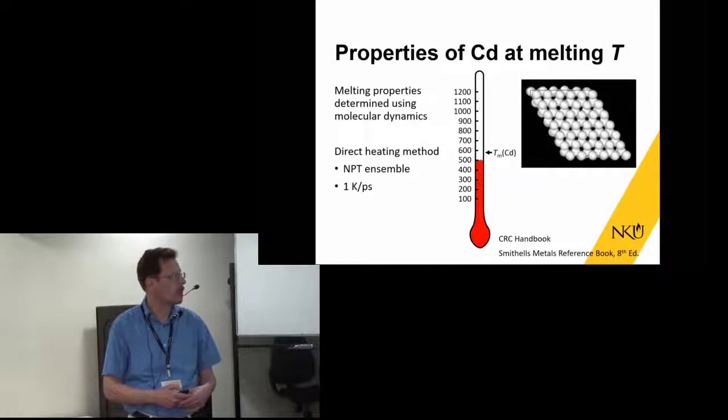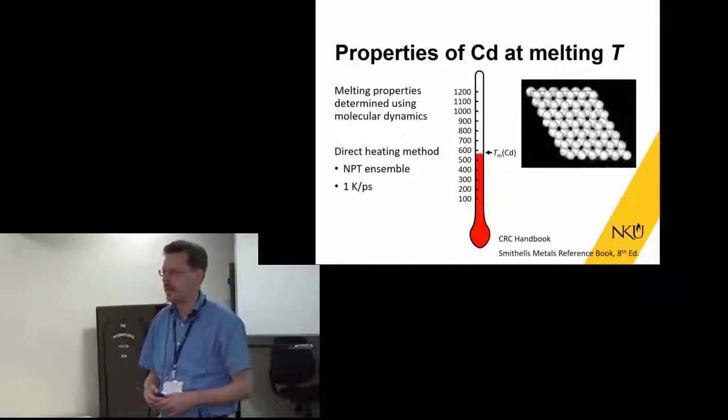Another property considered in recent derivations of MEAM potentials is the properties of these elements at their melting temperature. We can switch to doing molecular dynamics simulations. This animation is showing calculations doing a direct heating—keeping this cell at constant pressure, increasing the temperature at one kelvin per picosecond, somewhat rapid. As temperature increases, we're getting more and more vibration in the atoms.